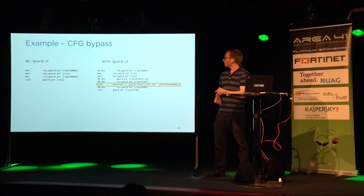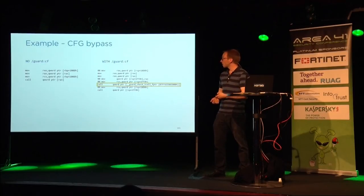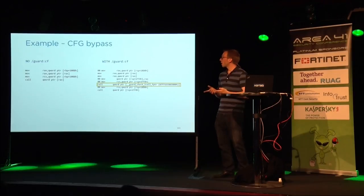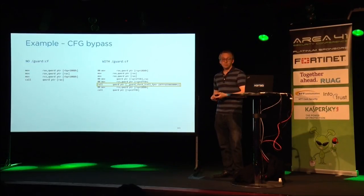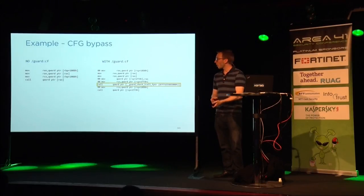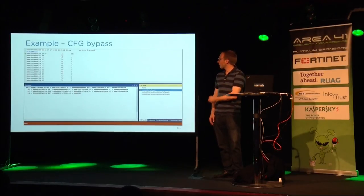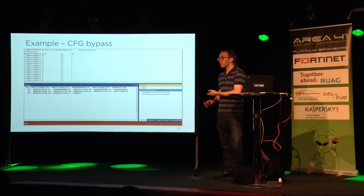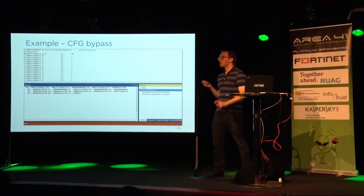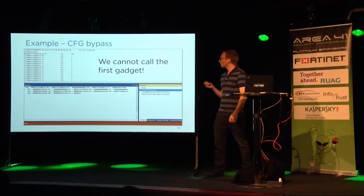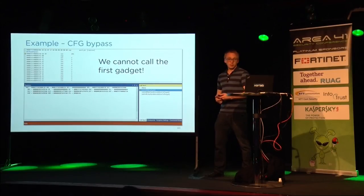Applying CFG to our sample program: our indirect call to the program main function is now guarded. Our exploit obviously fails because our first stack-pivoting gadget is not CFG-valid.